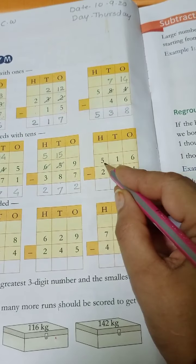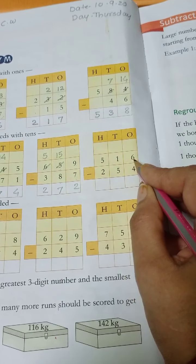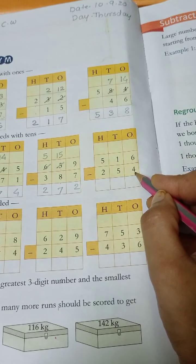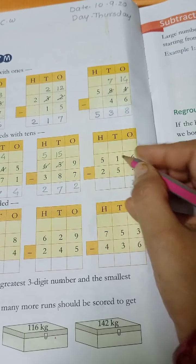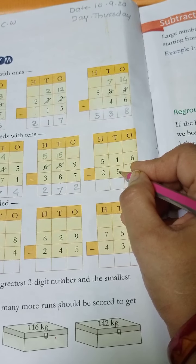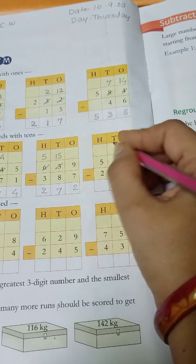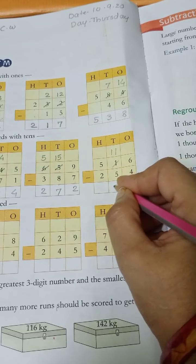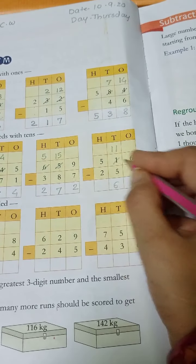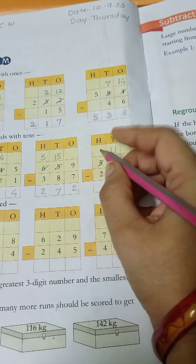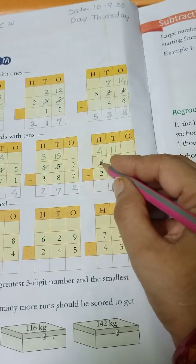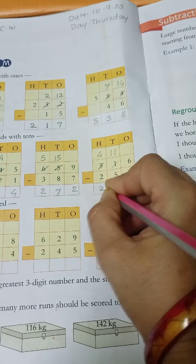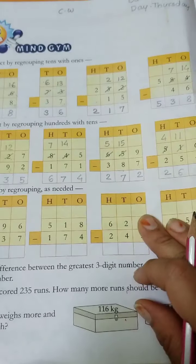Then next, 516 minus 254. 6 minus 4 is 2. Then 1 minus 5, is it possible? No. So here 10 plus 1 is equal to 11. And 11 minus 5 is 6. Then 5 minus 1 is 4. Then 4 minus 2 is 2. Check your answer.